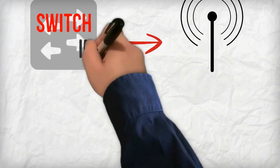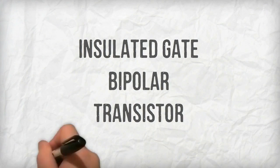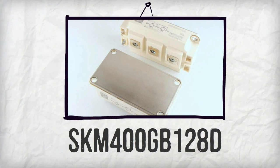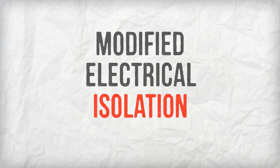As an insulated gate bipolar transistor, SKM400GB128D has modified electrical isolation between adjacent devices.